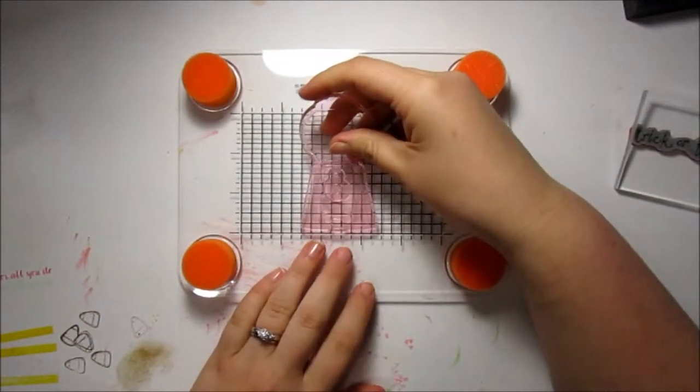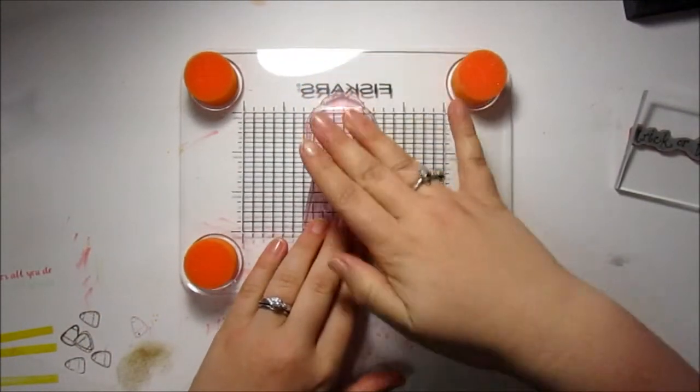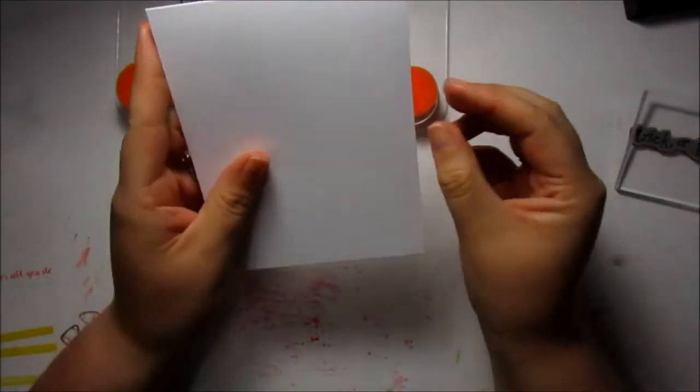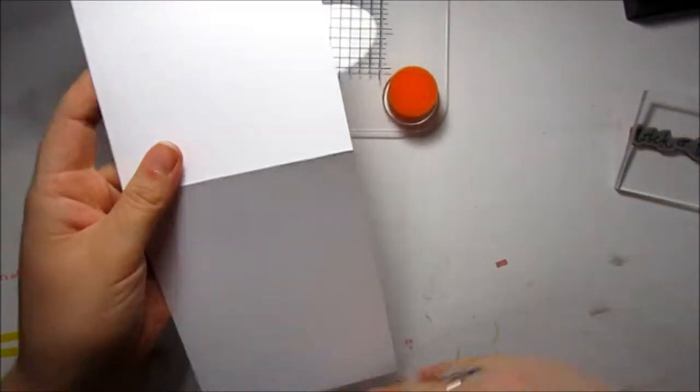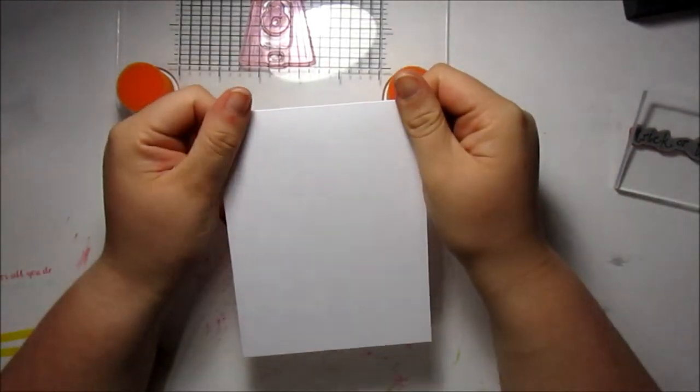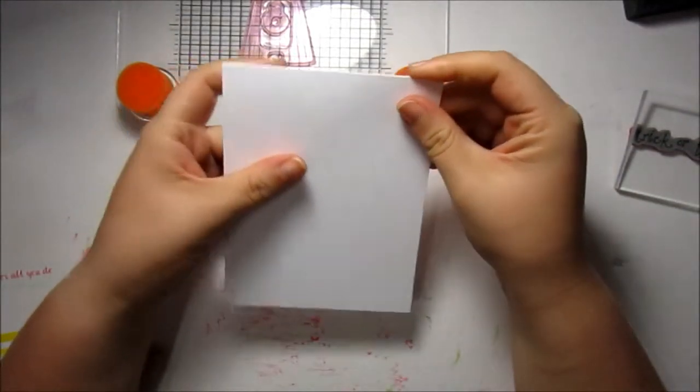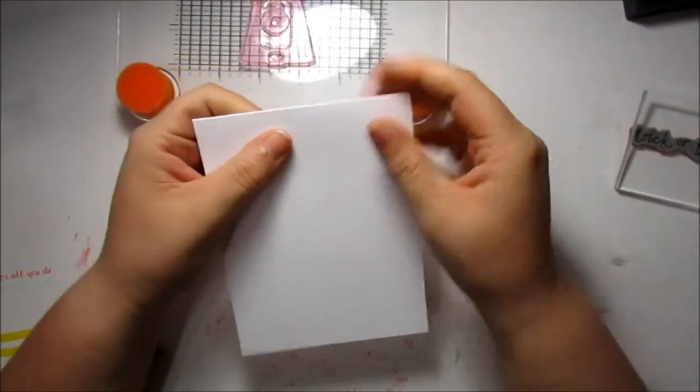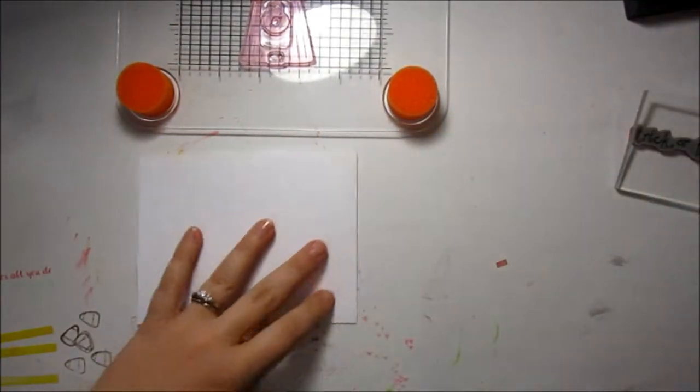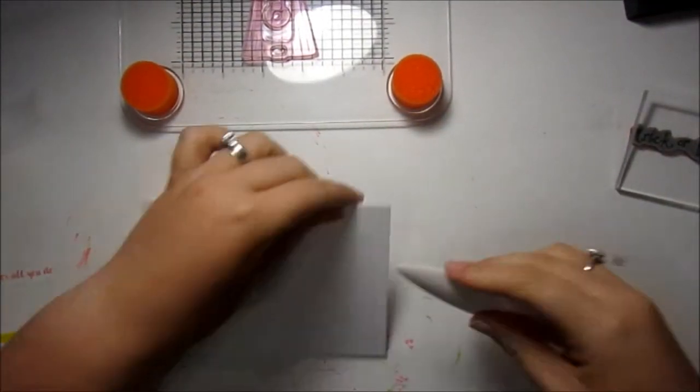I'm just going to mount it on my Fiskars stamp press, and then I have an A2 size card. It was originally 11 inches by 4 and a quarter. It's Neenah 110 solar white cardstock, and I've just cut and scored it to be the size of an A2 card. I'm going to give it a really good crease.